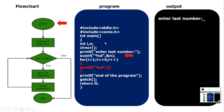Let's see an example — I have a flowchart, program, and output side by side. On the left is the flowchart, middle is the program, and right is the output. In this program I have taken two variables i and n, using scanf to initialize n. In the for loop, i is initialized to 1. The body of the loop is highlighted in red so you can identify it clearly.